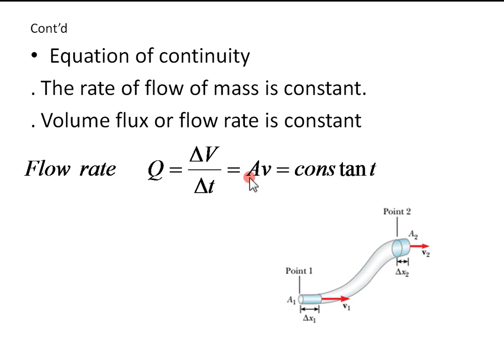If you look at the unit AV, the area is given in meters squared, and v is given in meters per second. So this is cubic meter per second, which is volume over time. We write A1v1 equals A2v2 for equation of continuity.